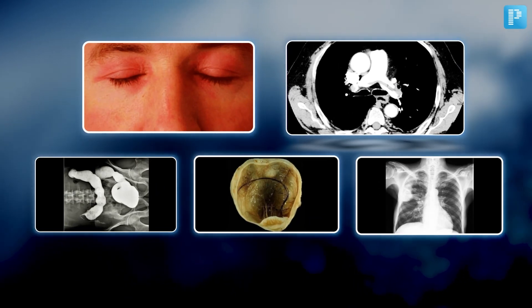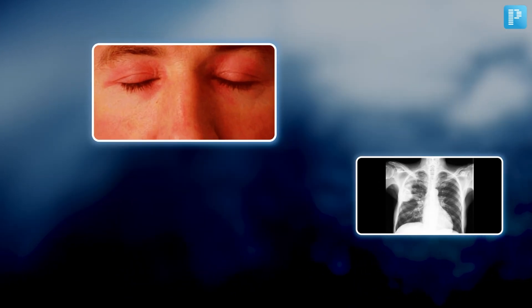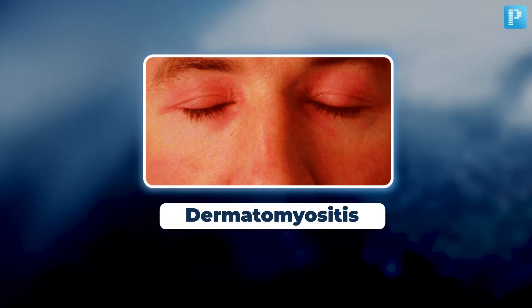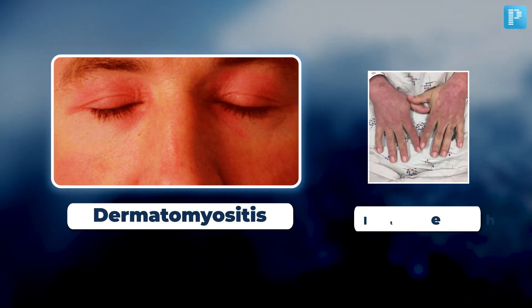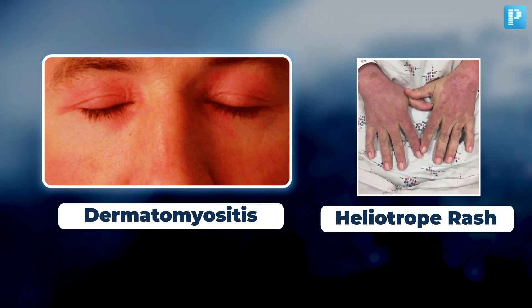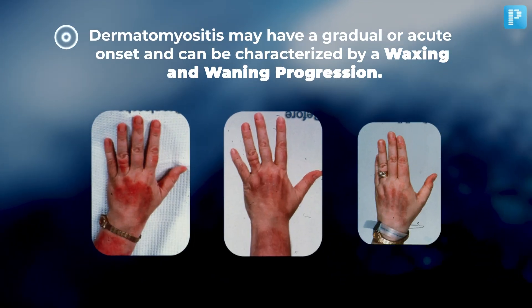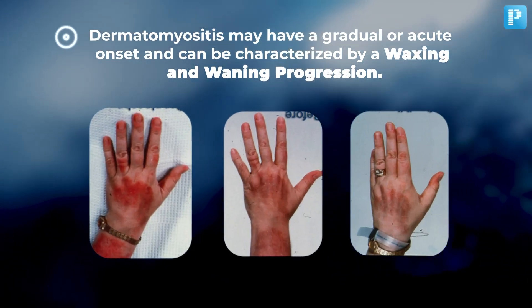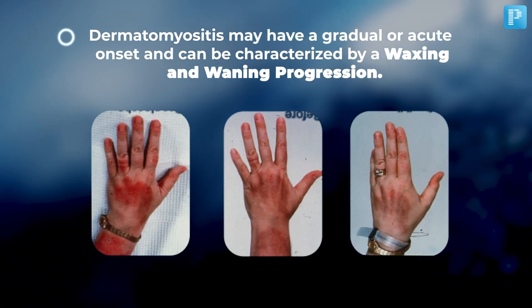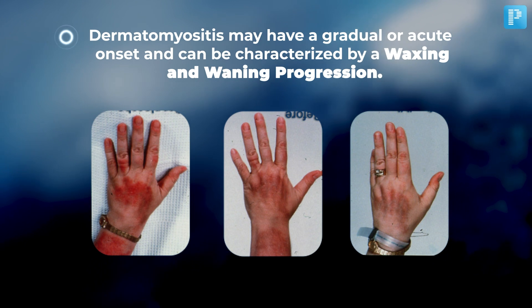Time to look at the key findings. The first image shows a case of dermatomyositis, where the primary cause is prominently visible in the form of heliotrope rash. Dermatomyositis may have a gradual or acute onset and can be characterized by a waxing and waning progression.